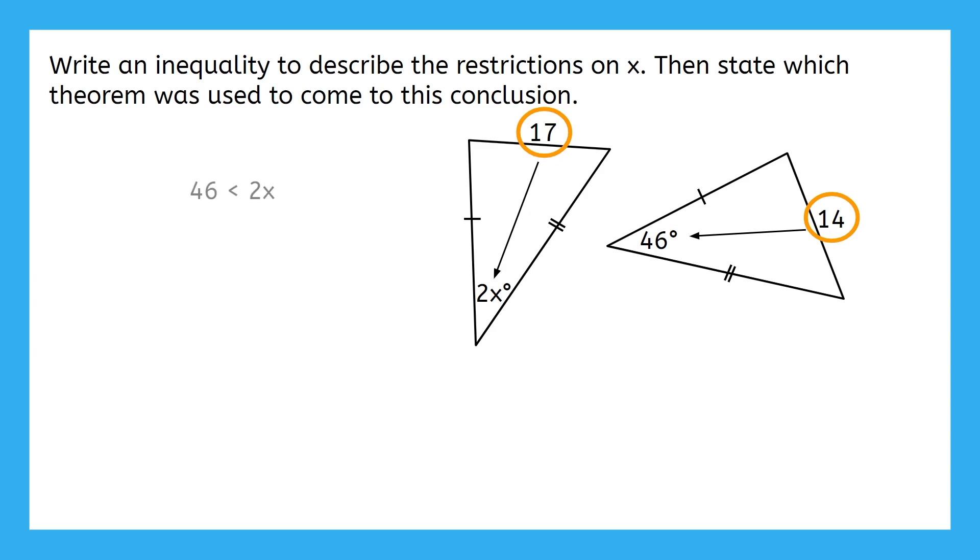This gives us that 46 is less than 2x. Hey, which theorem did we just use? We knew which side length was bigger and came to a conclusion about which angle was bigger. That's the hinge theorem converse. Let's remember that for when we write our final answer.